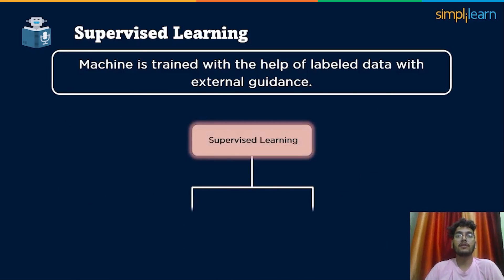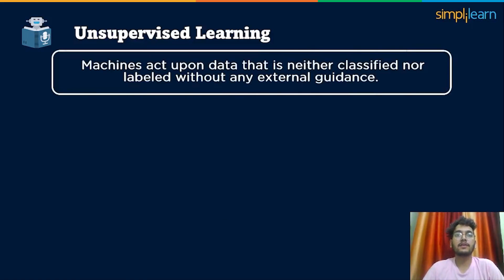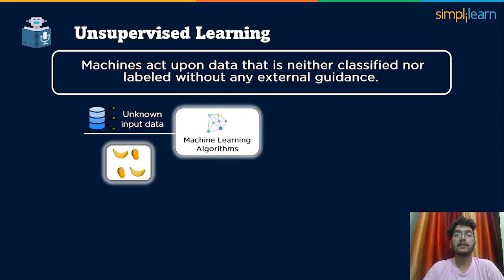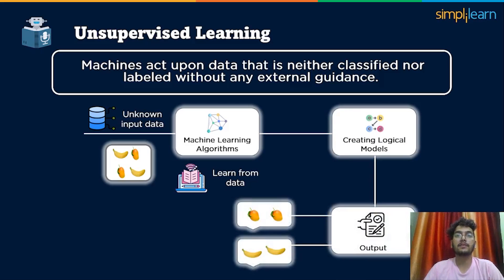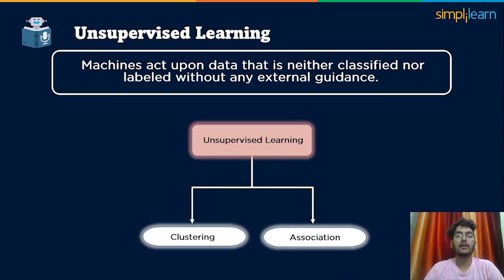Supervised machine learning can be further classified into two types: classification and regression. In unsupervised learning, the machine acts without any guidance — it acts upon data that is neither classified nor labeled without any external guidance. For example, if we input an image having both mango and banana, which the machine has never seen, it has no clue about the characteristics of mango and banana. Yet it can categorize them by their similarities, patterns, and contrast — that is, we can sort the picture into two parts. Unsupervised learning can be further classified into two types: clustering and association.